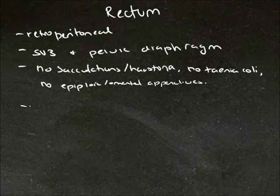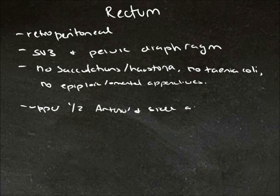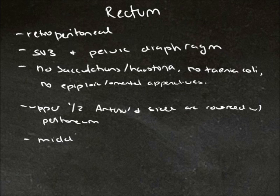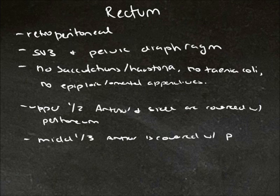For the upper third, the anterior and sides are covered with peritoneum. The middle third, only the anterior is covered with peritoneum. The lower third has no peritoneum.